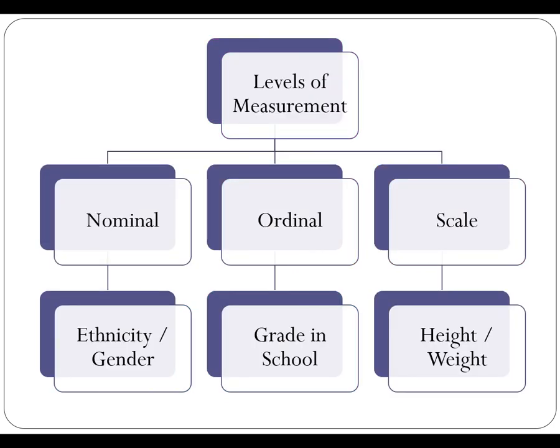When we talk about variables, we have to understand that there are different levels of measurement. These are really important, especially if you're using software like SPSS, where you have to define the type of measurement when you enter or import data. The different types of measurement are nominal, ordinal, and scale level of measurement. Scale is really looking at interval and ratio level of measurement lumped together, so I'm not going to differentiate between those two. Nominal level of measurement is really a categorical variable — things like ethnicity, gender, hair color, favorite color, or type of car you drive — things that can be classified or grouped.